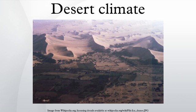There are usually two or three variations of a desert climate: a hot desert climate, a cold desert climate, and sometimes a mild desert climate.